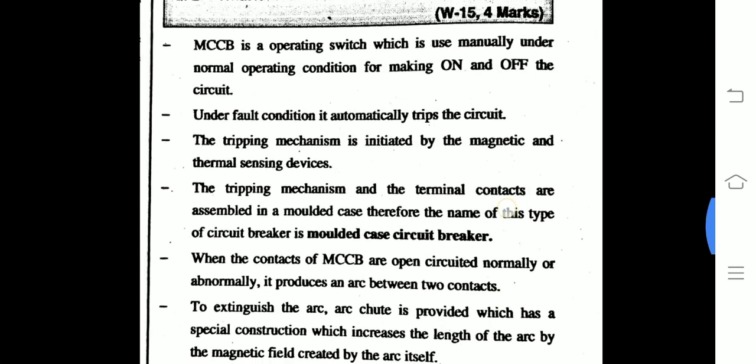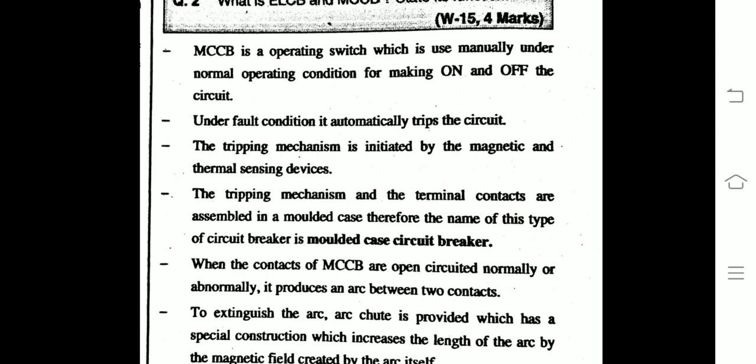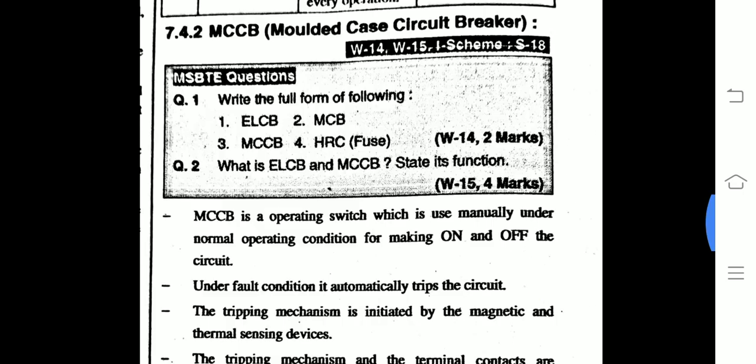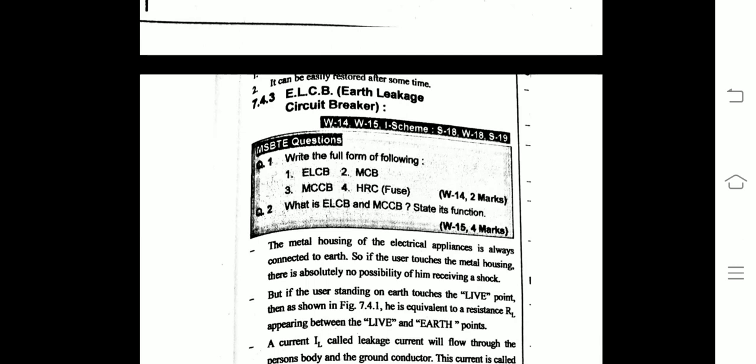The tripping mechanism and the terminal contacts are assembled in a molded case — therefore the name of this device is Molded Case Circuit Breaker. After MCB and MCCB, the next circuit breaker is the ELCB, which stands for Earth Leakage Circuit Breaker.